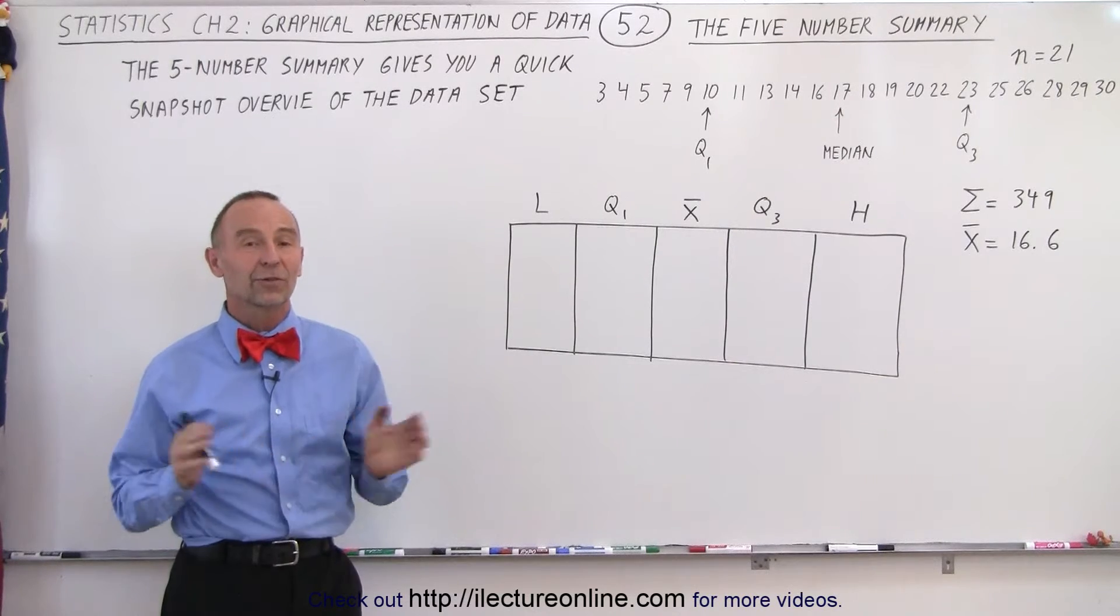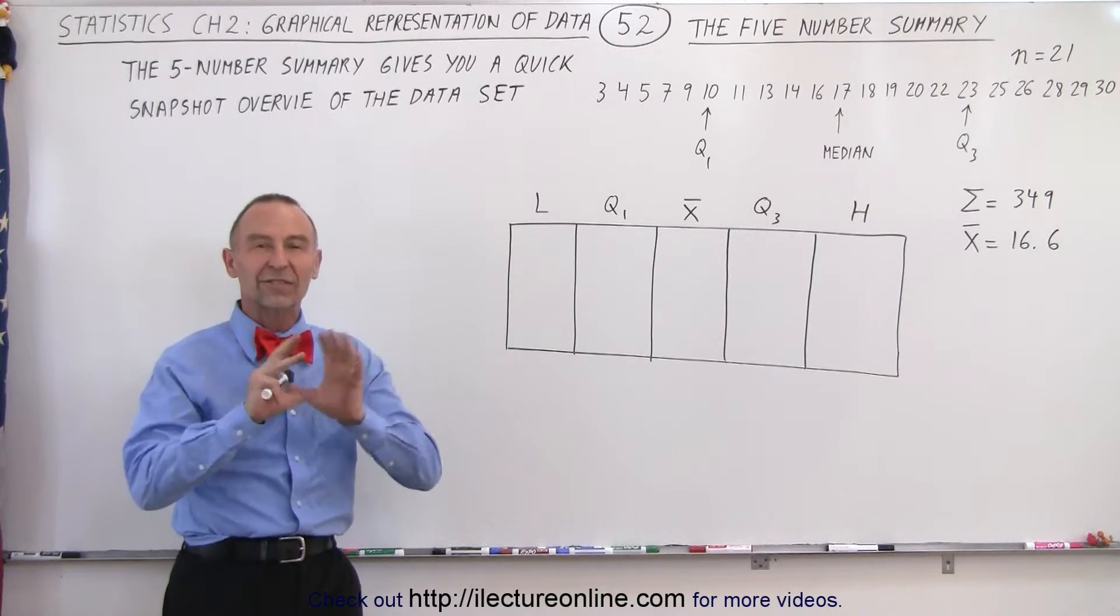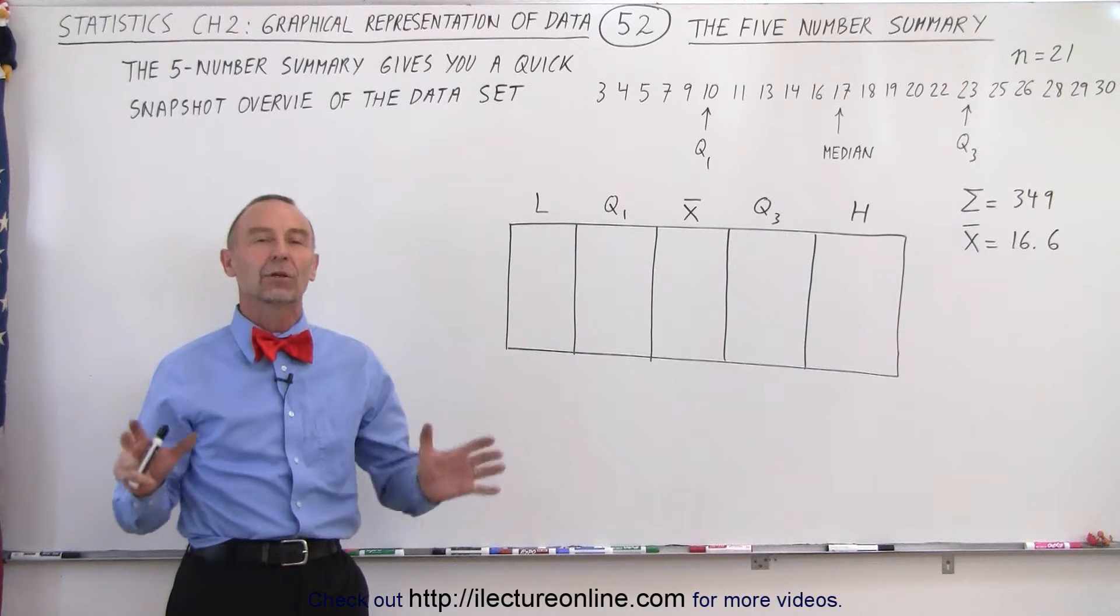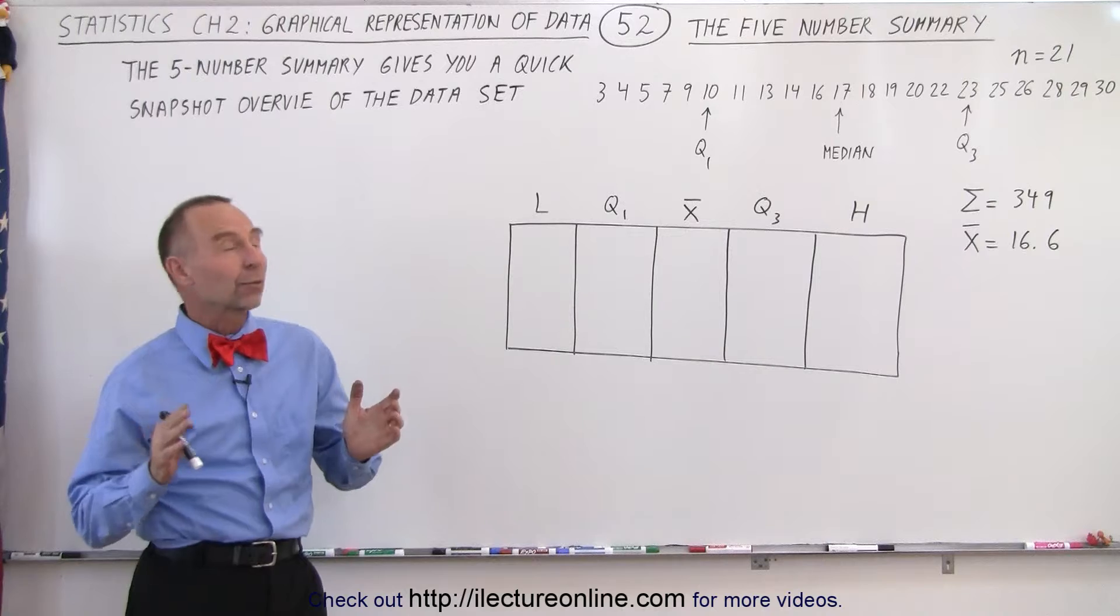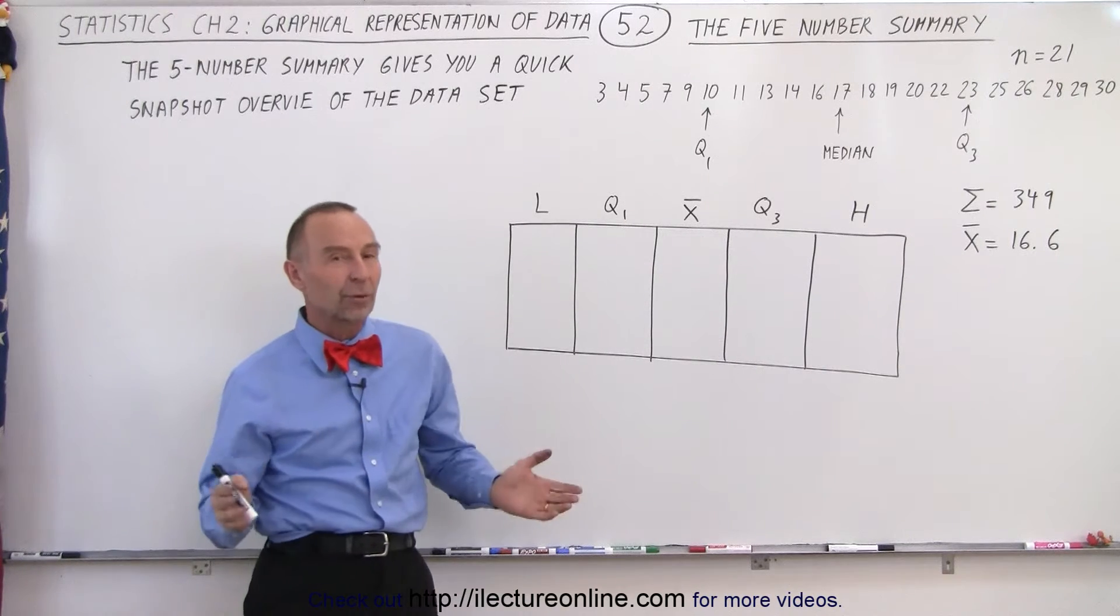Welcome to Electronline. Sometimes we just want to have a quick snapshot of what the data looks like. We want some basic information about it, and to do that we've come up with what we call the five number summary.